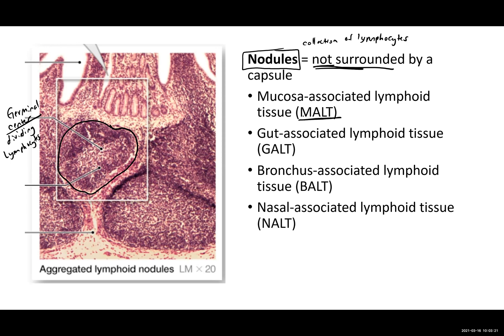You have gut-associated lymphoid tissue, more associated with the small and large intestine. You have bronchus-associated lymphoid tissue — when we're talking about our respiratory tract, you're inhaling not just oxygen, but pathogens and debris as well. And in the nasal cavity, you have nasal-associated lymphoid tissue. So you have this whole collection of lymphocytes without capsules lining your organs, especially those locations where you have foreign material that you're actively bringing in.